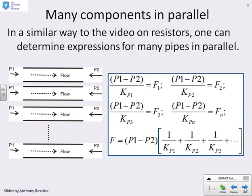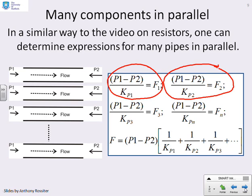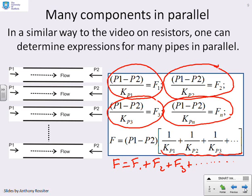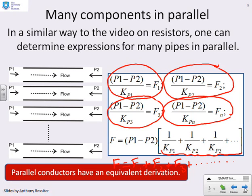What happens if I had lots of components in parallel? With many pipes in parallel, the flow rate through pipe 1 is the pressure difference divided by its pipe resistance, and similarly for pipe 2, pipe 3, all the way up to pipe n. The total flow rate F equals F1 plus F2 plus F3 plus … which gives F equals the pressure difference times (1 over Kp1 plus 1 over Kp2 plus 1 over Kp3 plus …). The heat flow case for many conductors is equivalent, and you can now do that by yourself.